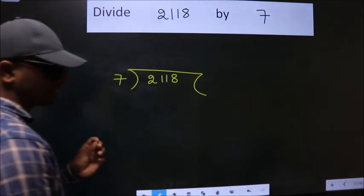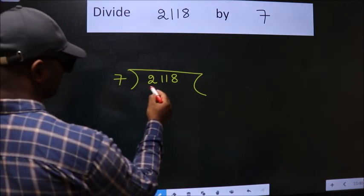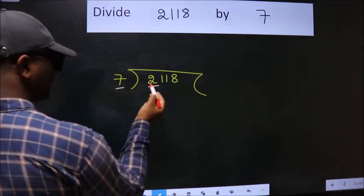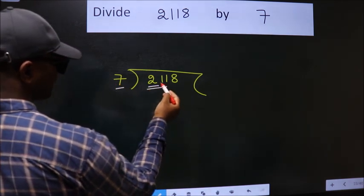This is your step 1. Next. Here we have 2. Here 7. 2 is smaller than 7. So we should take 2 numbers, 21.